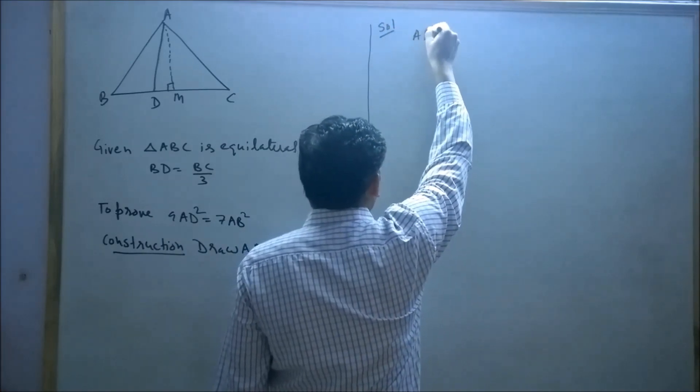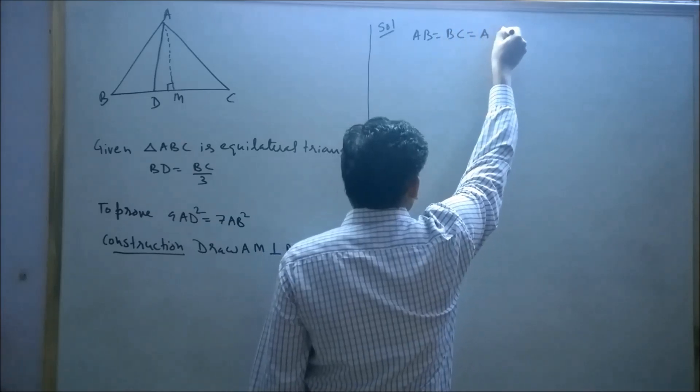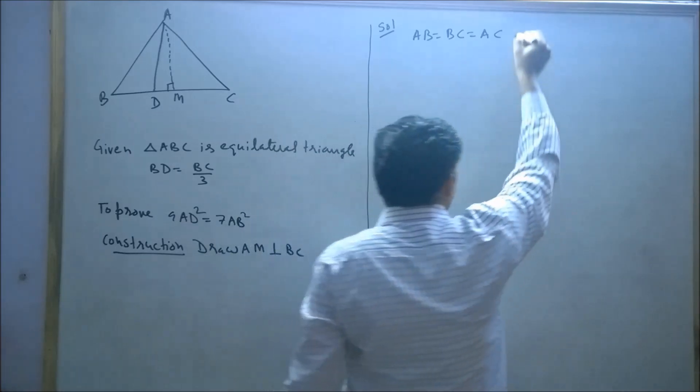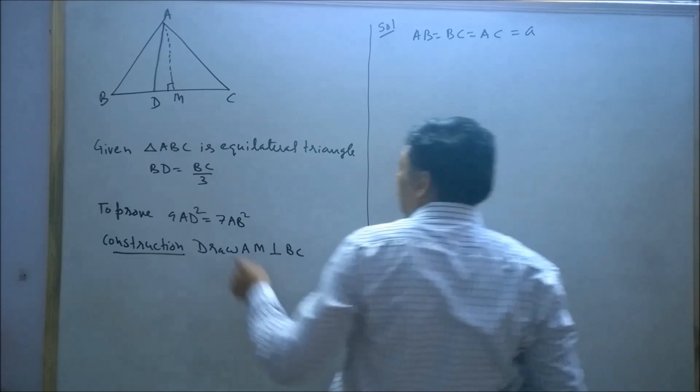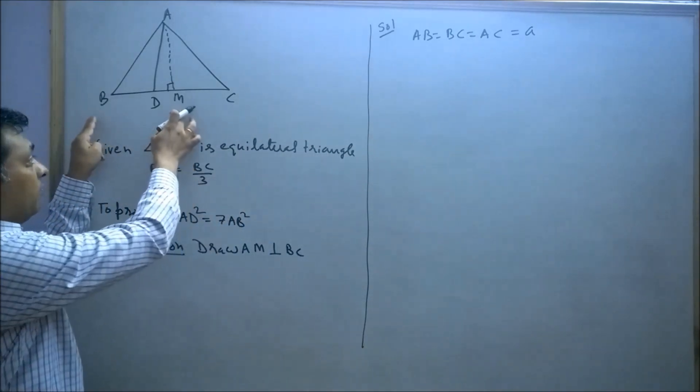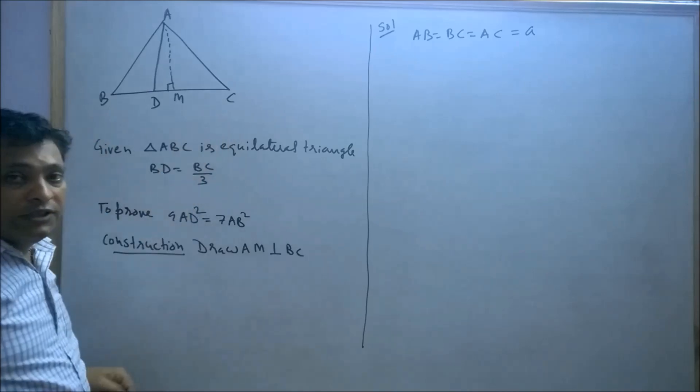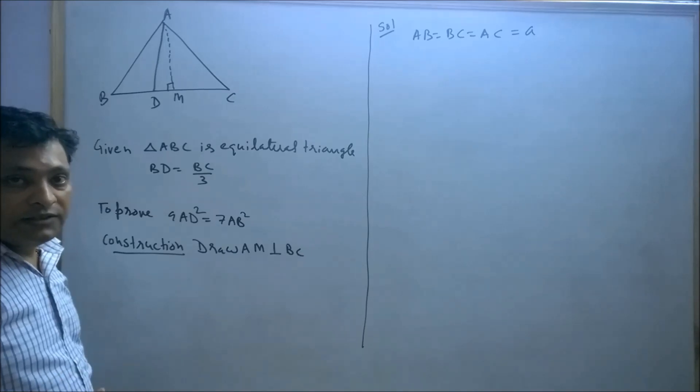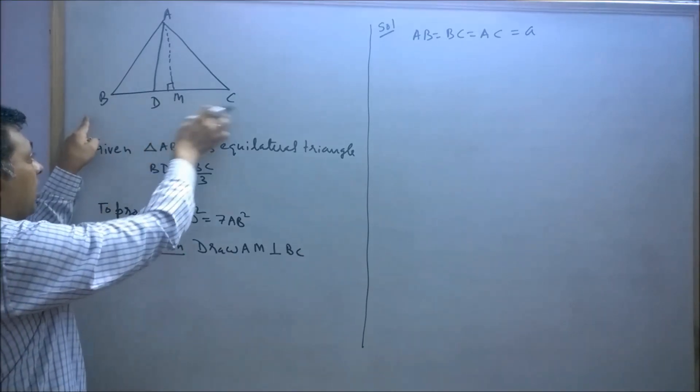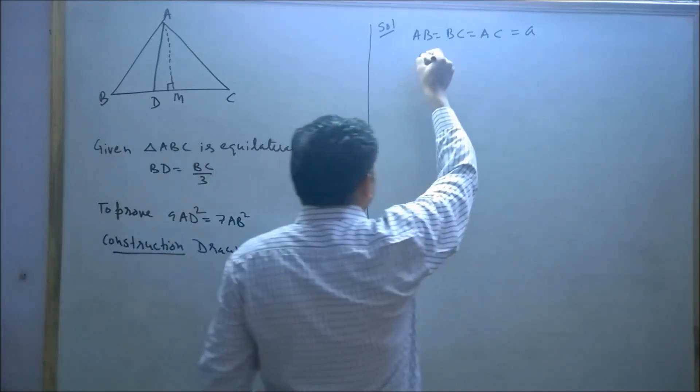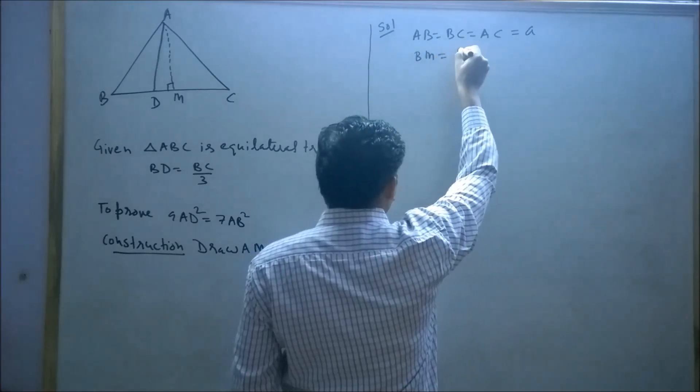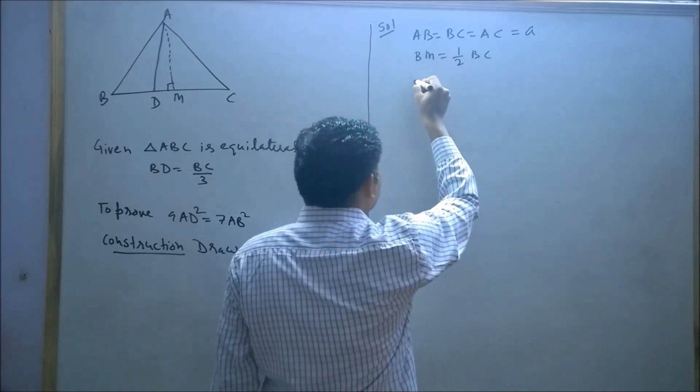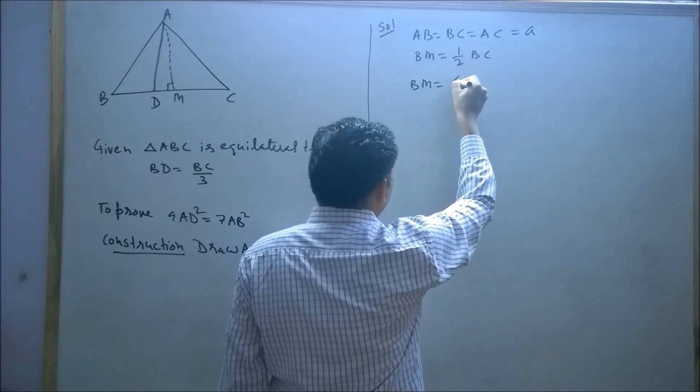It is given that AB equals BC equals AC. Since ABC is an equilateral triangle, let these sides be represented by a. Now find BM. BM is half of BC since AM is the altitude in an equilateral triangle, and altitude also acts as a median. So BM equals a by 2.